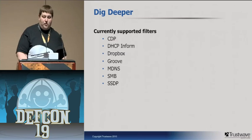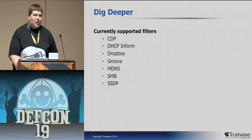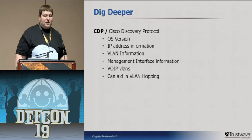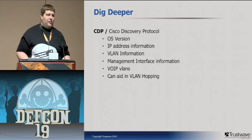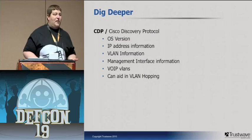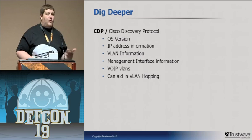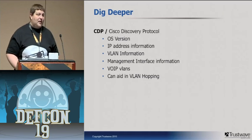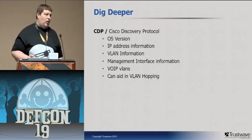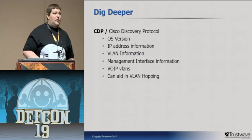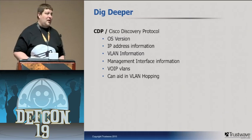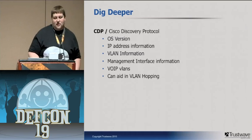As far as what's currently in each filter: CDP has OS version, IP address information, and VLAN information. Where this really comes in handy is on pen tests — you'll get things like the voice over IP VLAN and other information leading to further compromise. Since you're getting all OS versions, if there's a vulnerability in a certain version of IOS, this will help you. It also aids VLAN hopping by listing available VLANs and frequently gives out management VLAN information — including the IP address that accepts SNMP traffic or SSH connections.